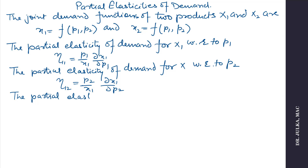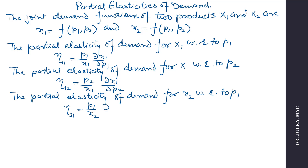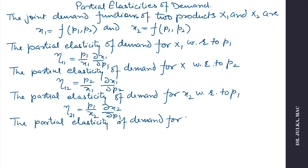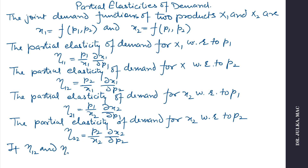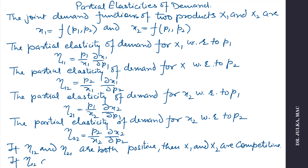The partial elasticity of demand for X2 with respect to P1, denoted by η21, equals (P1/X2) · (∂X2/∂P1). The partial elasticity of demand for X2 with respect to P2, denoted by η22, equals (P2/X2) · (∂X2/∂P2). Always remember: if η12 and η21 are both positive then products are competitive, and if η12 and η21 are both negative then products are complementary.